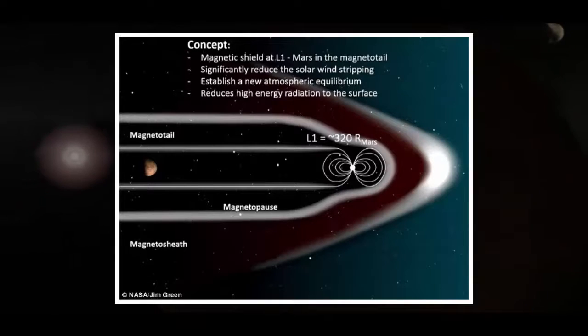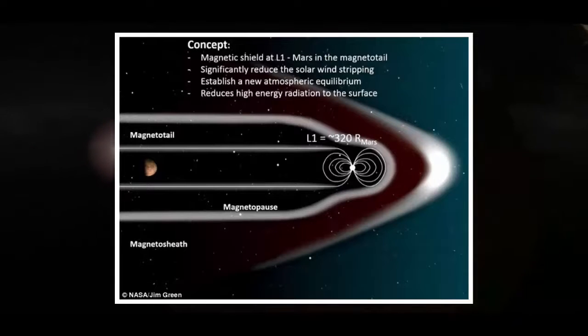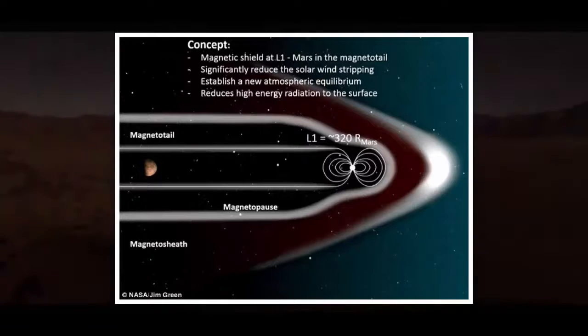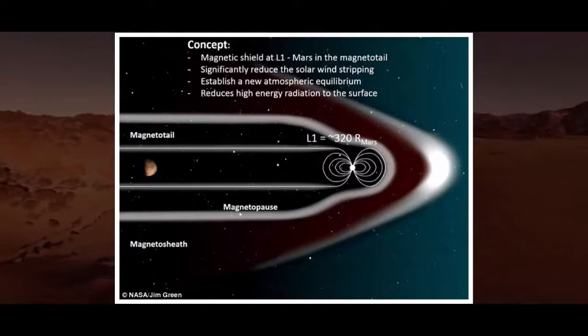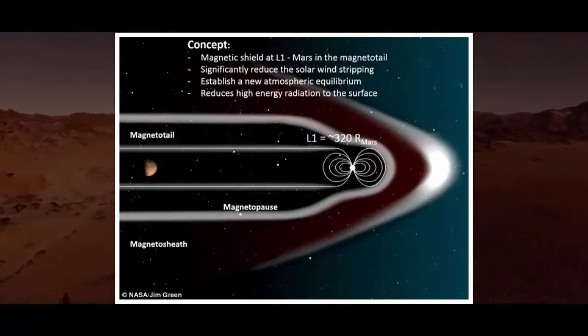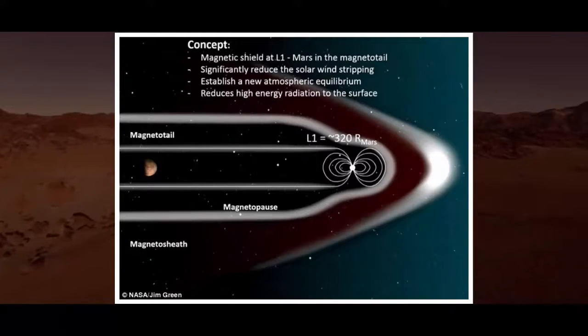Currently, it has stabilized at roughly 1% the density of Earth's atmosphere, thanks to the release of gases from internal pockets. With a shield, that could increase by several times and allow the surface temperature to rise to an average of 4 degrees Celsius.